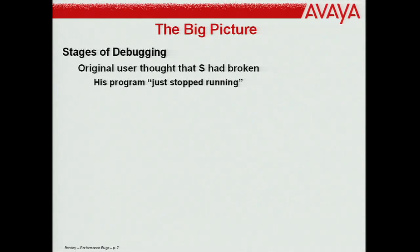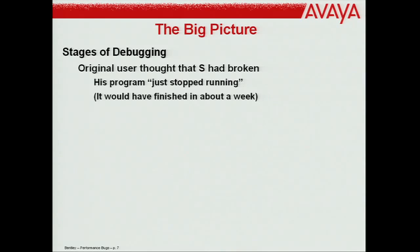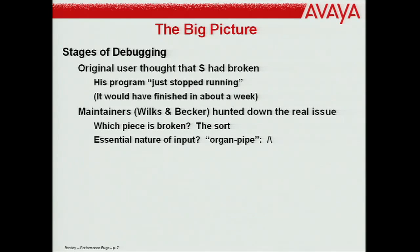A sort that should have that magic O(n log n) runtime is in fact quadratic — bummer. A user thought that the S software system had broken: 'It just stopped running.' Wilkes and Becker discovered it would have finished in about a week. The maintainers hunted down the real issue, found the organ pipe problem, and wrote this great bug report. I'll get back to the next step — building a new one that fixed the issue.